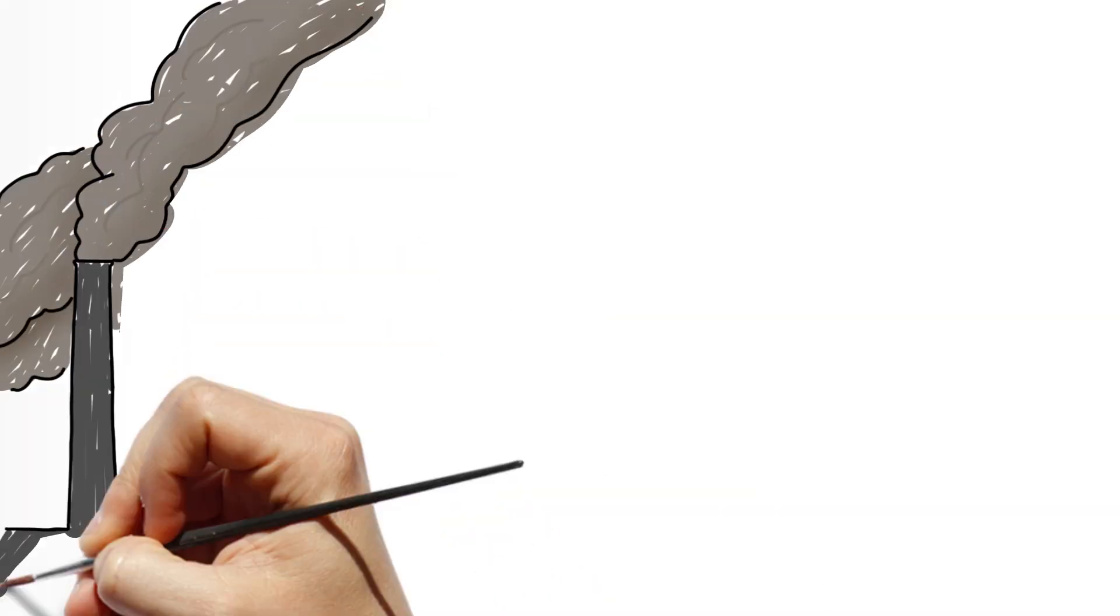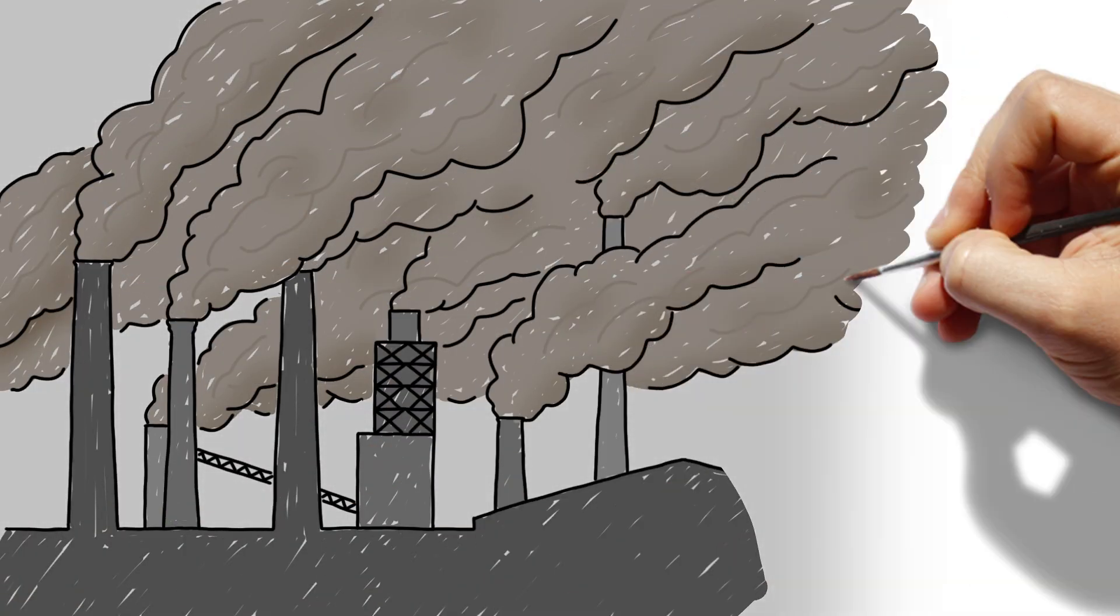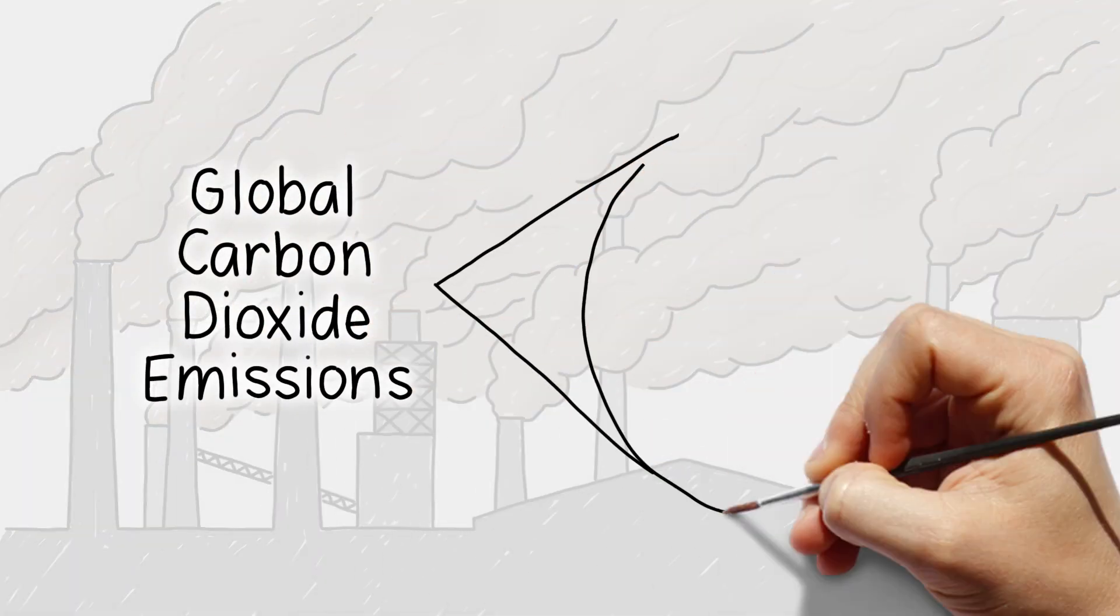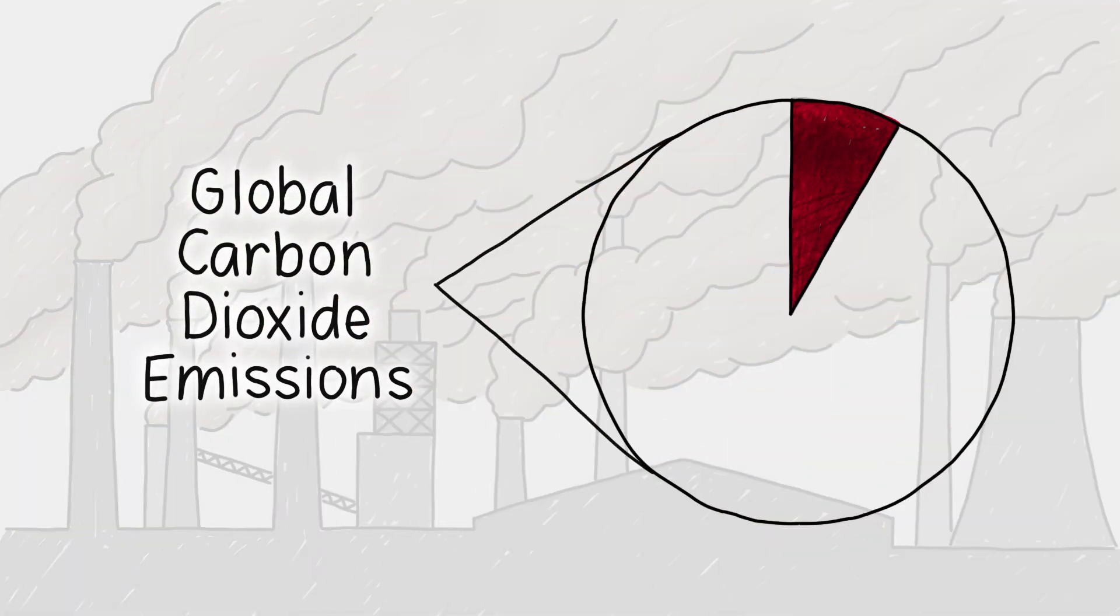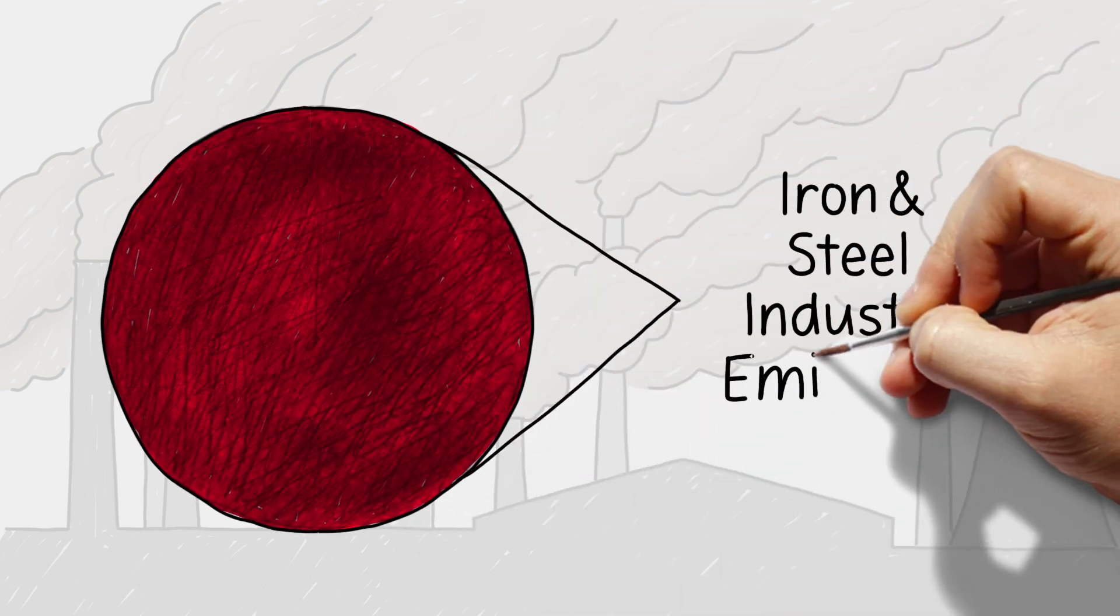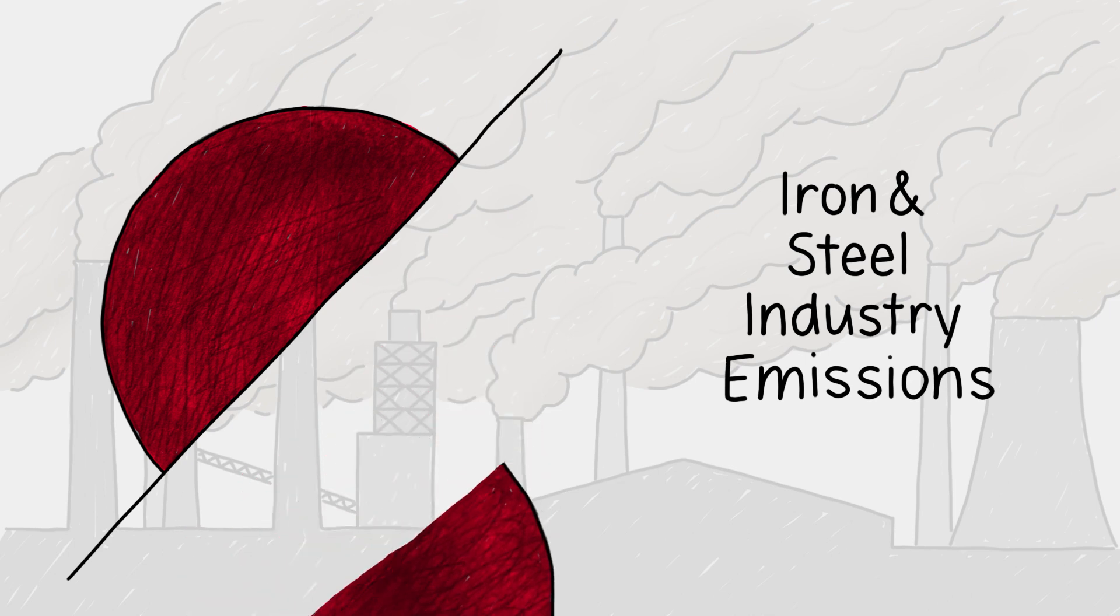And traditional steelmaking methods are also energy-intensive and dirty, accounting for nearly 8% of global carbon dioxide emissions. Scientists say the iron and steel industry must cut emissions in half by 2050 to meet global climate goals.